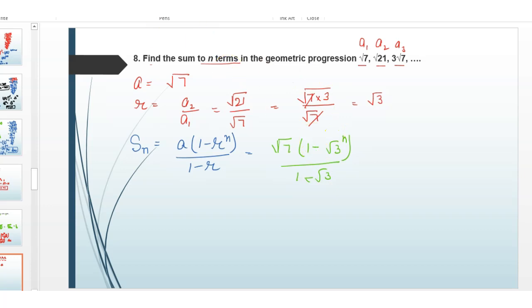So this is our n term sum. We will further simplify this. This becomes root 7 into 1 minus root 3 raised to power n divided by 1 minus root 3. We will rationalize. Here minus 1 becomes plus, so 1 plus root 3 upon 1 plus root 3.